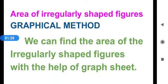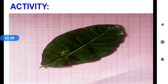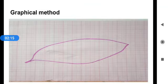We can find the area of irregularly shaped figures with the help of a graph sheet. The following activity shows how to find the area of irregularly shaped plane figures. Let us do the activity. First, take a leaf from any one of the trees in your neighborhood. Place the leaf on a graph sheet and draw the outline of the leaf with a pencil. Remove the leaf — you can see the outline of the leaf on the graph sheet.